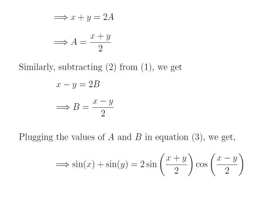Now we plug the values of a and b in terms of x and y into equation 3. We get sin of x plus sin of y equals 2·sin((x+y)/2)·cos((x-y)/2). This is the identity we set out to derive for sin(x) plus sin(y).